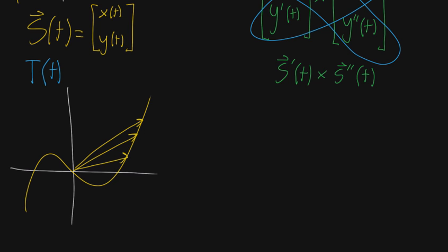And now the first derivative, that first derivative vector, s prime of t, is telling you how that tip should move to go along the curve. As you go from one s vector to another s vector, what direction should that tip move?